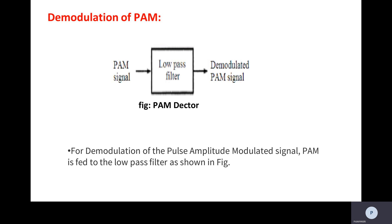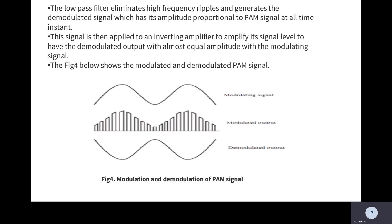Now we will see the demodulation of a PAM signal. For demodulation we use a low pass filter. We give the PAM signal as input to the low pass filter. The work of a low pass filter is to allow only low frequencies and reject or attenuate the high frequency components. The PAM signal is fed to the low pass filter and at the output side we get the demodulated PAM signal.